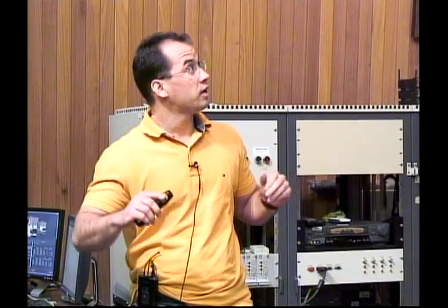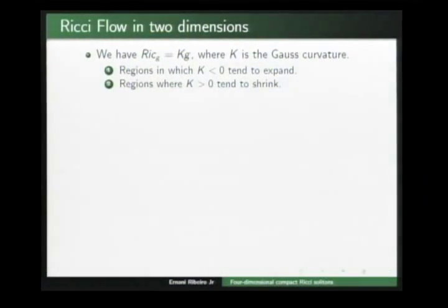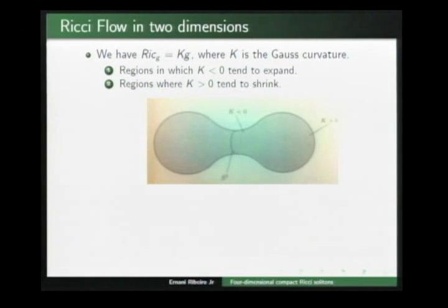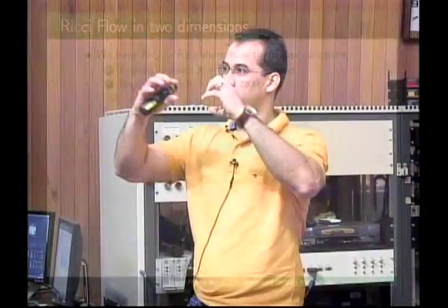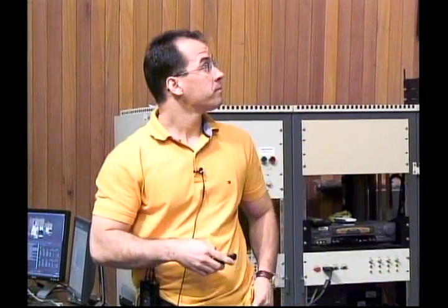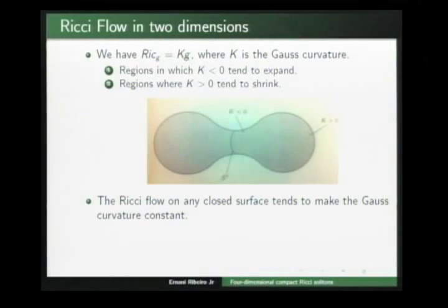In two dimensions, regions of a compact manifold with negative Gauss curvature tend to expand, and regions where the Gauss curvature is positive tend to shrink. In fact, the Ricci flow tends to make two-spheres round. There is an excellent theory showing that the Ricci flow on closed surfaces tends to make the Gauss curvature constant.